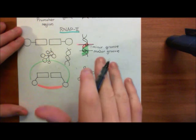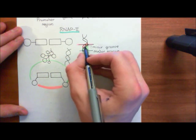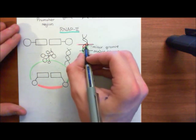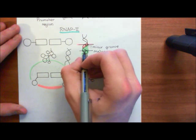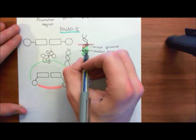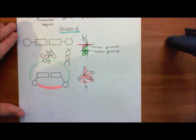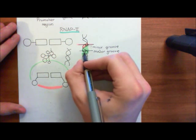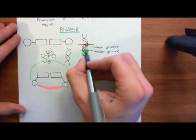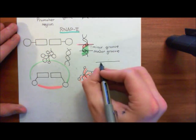The transcription factors are all going to bind within the major groove of DNA rather than the minor groove. You might think it's obviously because there's more space, but there's a subtle reason why it had to be binding in the major groove rather than the minor groove. We want our transcription factors to bind to specific sequences of organic bases — they don't just bind willy-nilly to DNA.